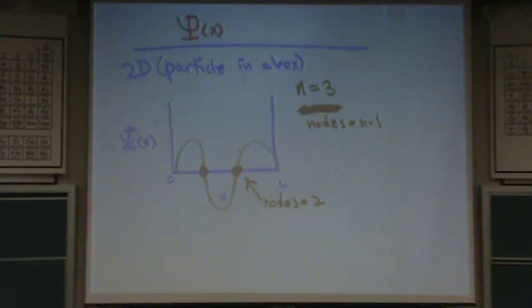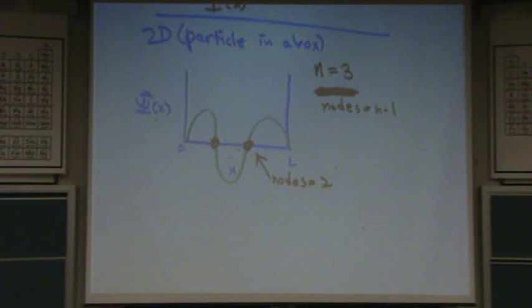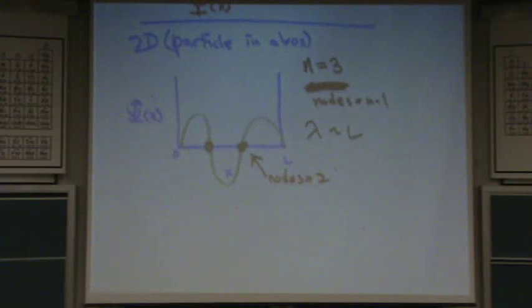So this is the third level. The lowest energy level is n equals one. And this is the higher energy level here, the n equals three. The second thing that you'd be interested in knowing is how are wavelength and L related?